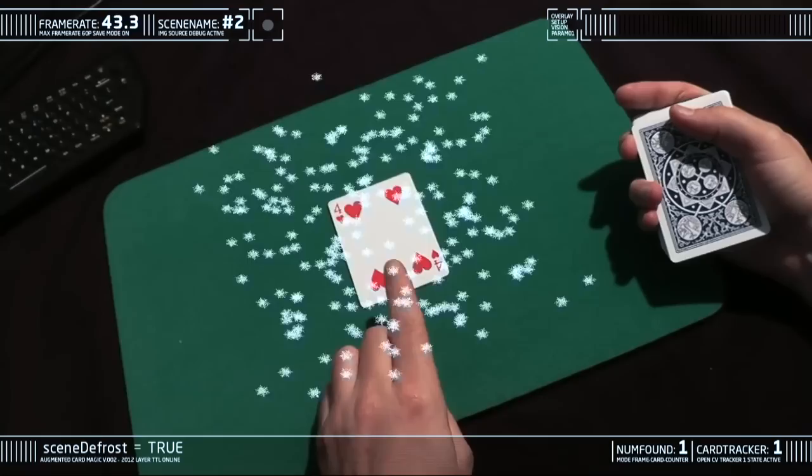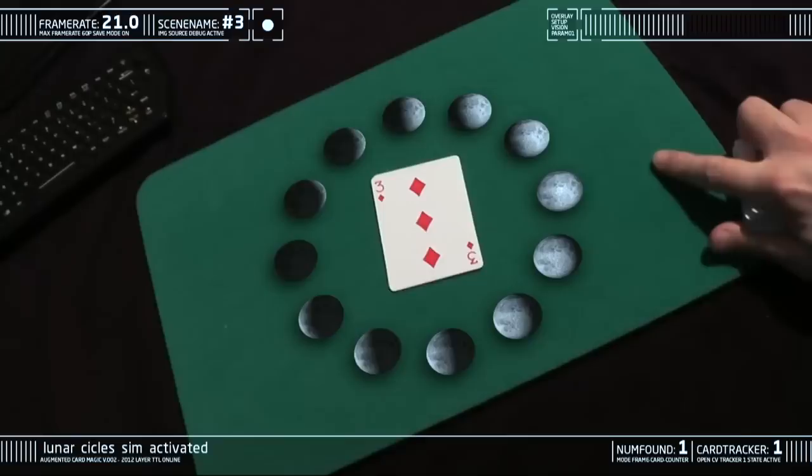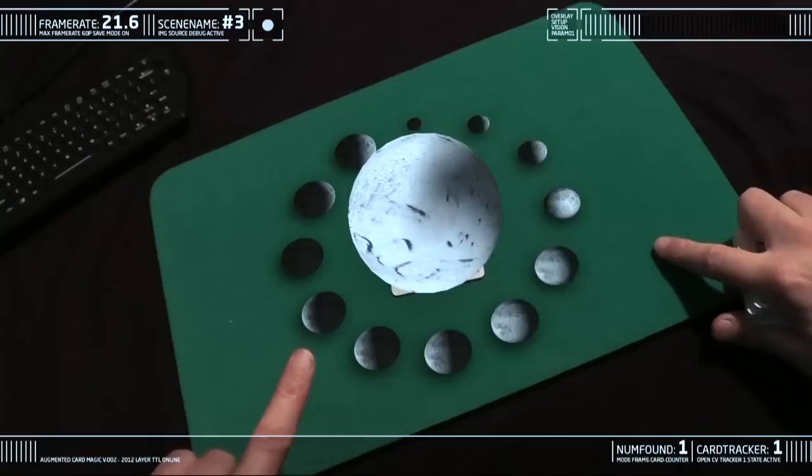There are 13 cards in each suit. Each card represents a phase of the 13 lunar cycles. So over here is low tide, and over here is high tide, and in the middle is the moon. The moon is one of the most potent symbols of magic.